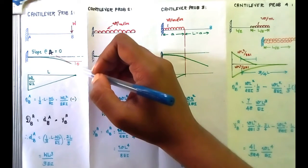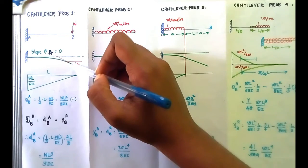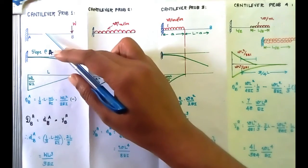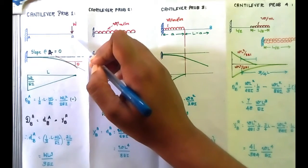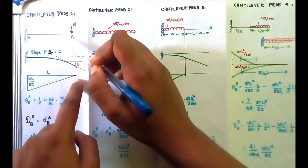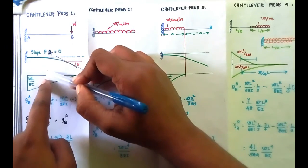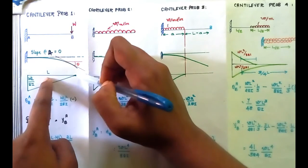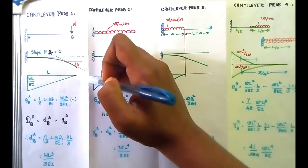Next, we calculate the deflection at the free end. The deflection or deviation at the free end is equal to the moment of the bending moment diagram between A and B with respect to B, the point at which deflection is desired. That is: area = half into WL by EI, multiplied by the centroidal distance from B, which is 2L by 3. This gives WL cubed by 3EI.